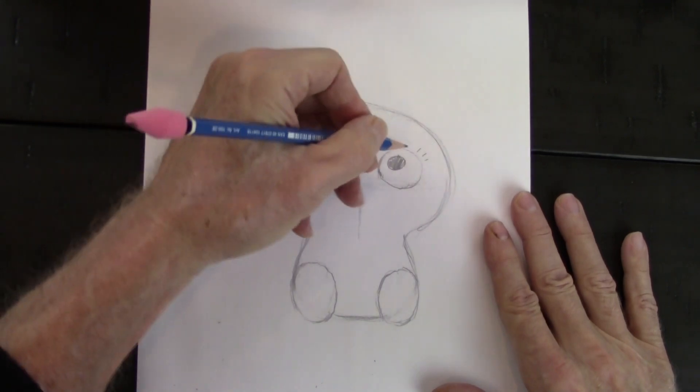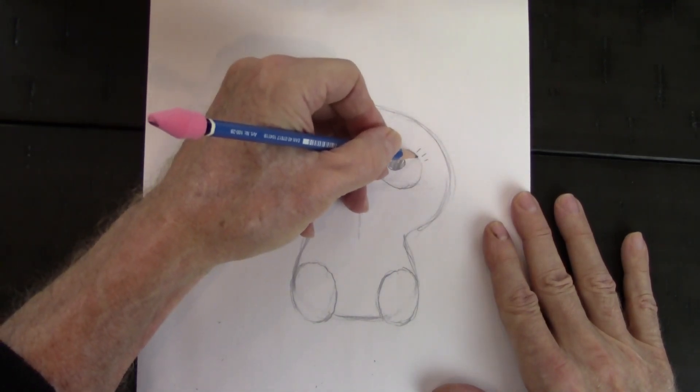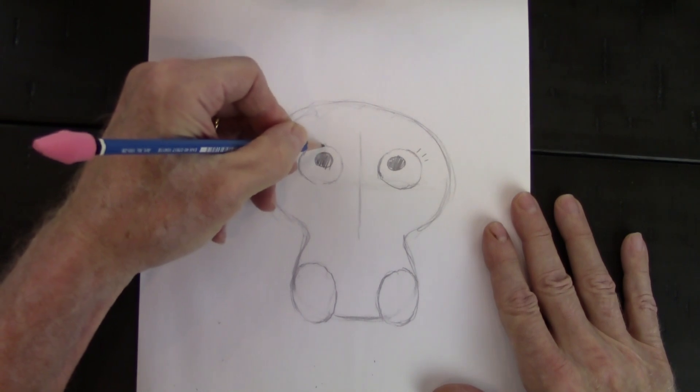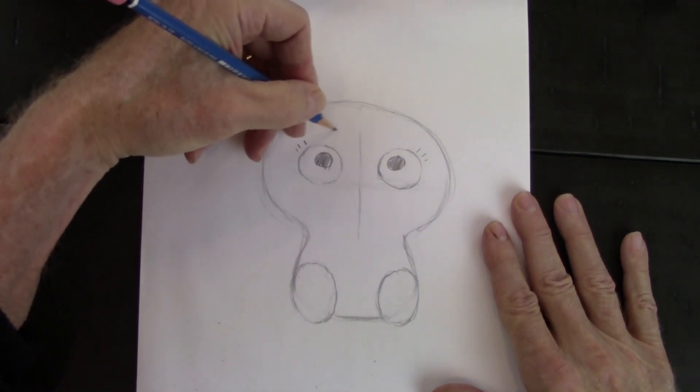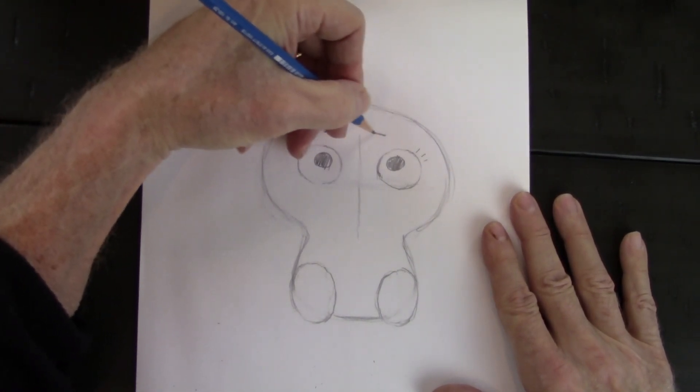A few little eyelashes. And this side too. And toward the middle of the face, closer to the middle than where the eyes are.